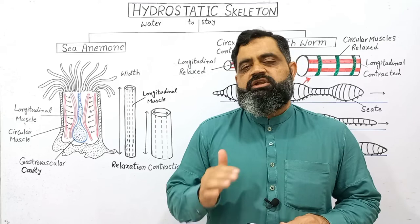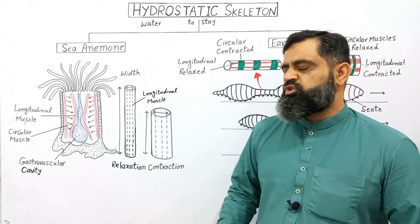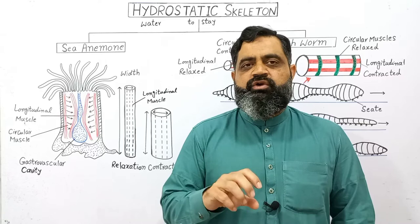When the danger is over, water enters into the gastrovascular cavity again, the longitudinal muscles relax, and the circular muscles contract, returning the animal to an upright position. In this way, these soft-bodied animals maintain a skeleton with the help of fluid inside the gastrovascular cavity, which is a good example of hydrostatic skeleton.